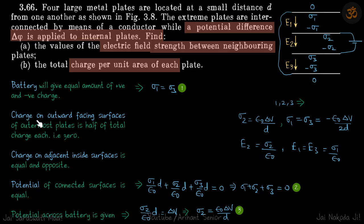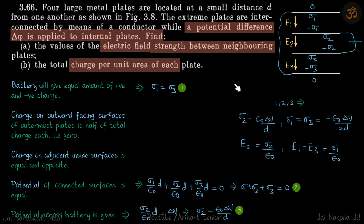The reason is that the charge on the outward-facing surfaces of the outermost plates is half of the total charge each. But in this case there is no charge present in the beginning, so the total charge is zero. Half of zero is also zero, so the charge on the outermost facing surfaces is zero.